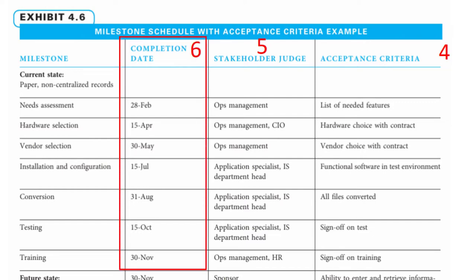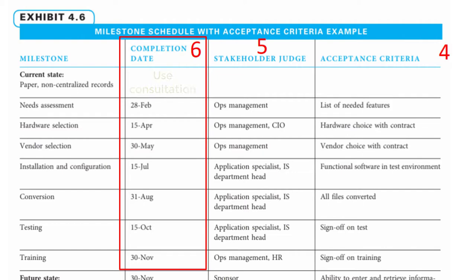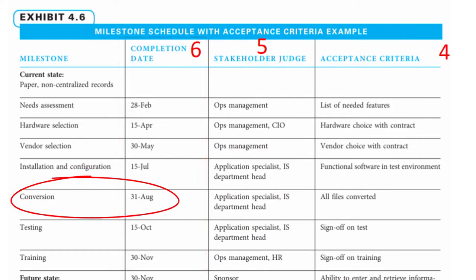Finally, determine expected completion dates for each milestone. It's important that this is realistic — avoid being overly optimistic or pessimistic. A project manager will usually consult with others to determine reasonable timeframes. On this project, the completion date for converting manual to digital files is the 31st of August. Presuming this activity could commence in late February, this allows approximately 6 to 7 months to complete the conversion.